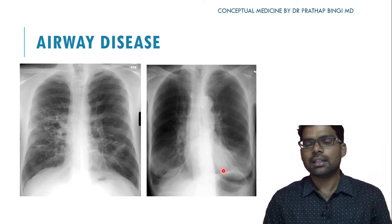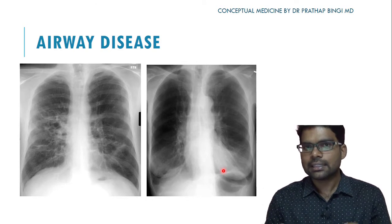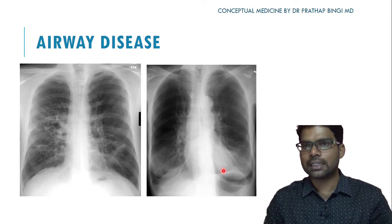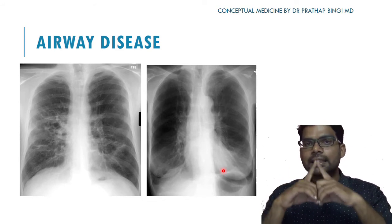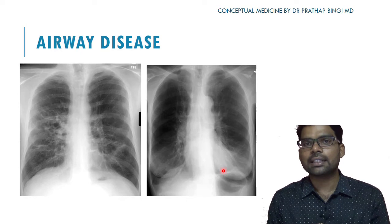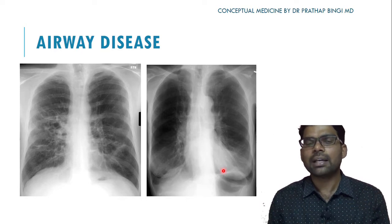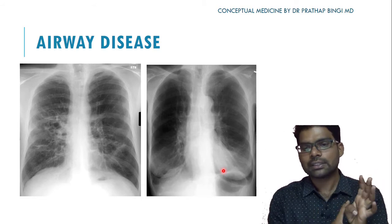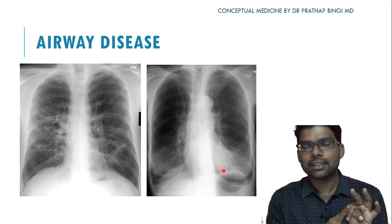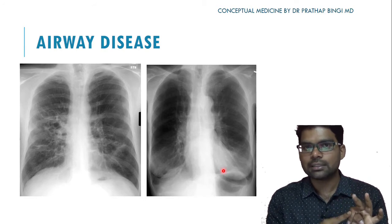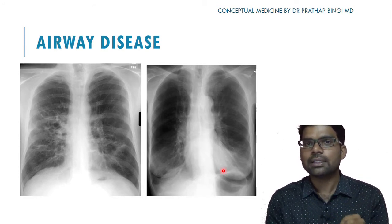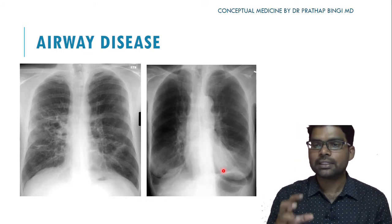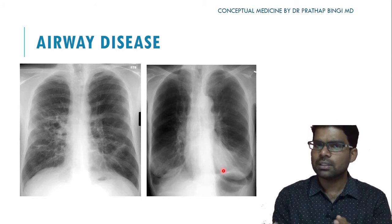Additional minor features of COPD include widening of intercostal spaces due to air trapping and increased length of the trachea in the neck. To summarize: the four major COPD X-ray features are hyperinflation of lung fields, decreased bronchovascular markings, diaphragmatic flattening, and a tubular small heart.